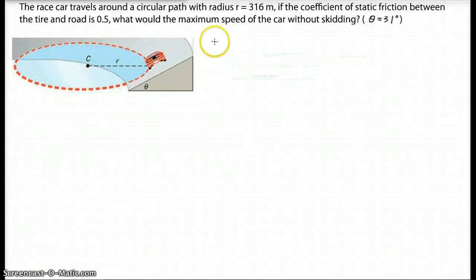Hello. This is a question. A car traveling around a circular path with radius r equals 316 meters. And this kind of road is called a banked road.